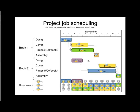What can we choose to optimize this? We can choose when we start a job — for example, instead of doing the blue job first, we could start with the yellow cover job at day six and do the blue job later. That's one dimension we can play with.